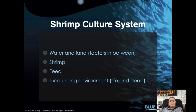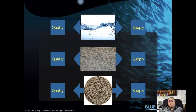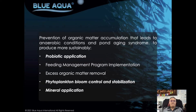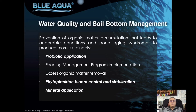To understand this, we need to look at the shrimp culture system, which is very simple: we have water and land, we have shrimp, we have feed, and we have the surrounding environment. More simply, you need water quality and supply, shrimp quality and supply, and feed quality and supply. Disease plays a very important role — not only infectious disease, but nutritional, environmental, and genetic disease as well.